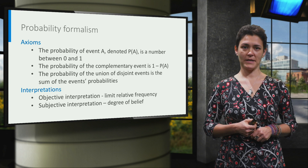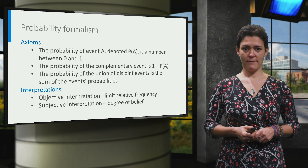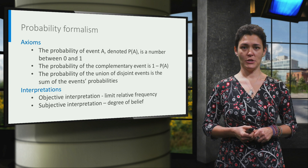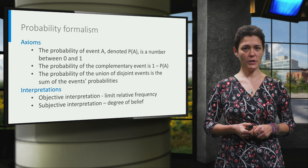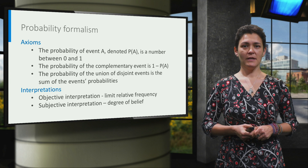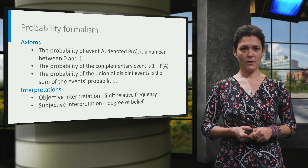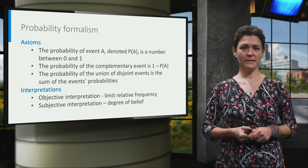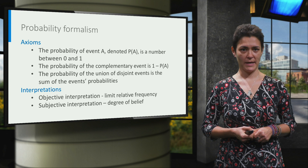The third axiom considers disjoint events. Disjoint events are events that cannot happen at the same time. The probability of the union of such events is the sum of the events' probabilities.